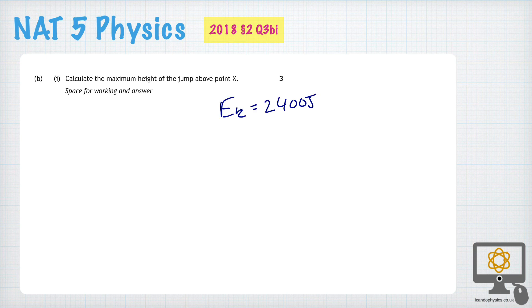So the amount of potential energy, assuming 100% conversion of energy from potential to kinetic, the potential energy at the top of the slope would also have been 2400 joules. And that's the key learning point here, the key point to understand.